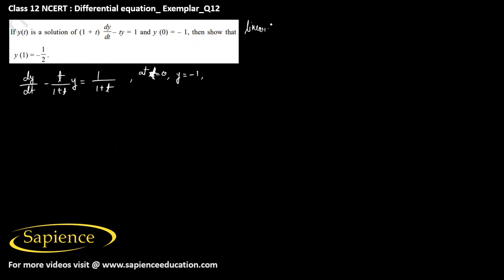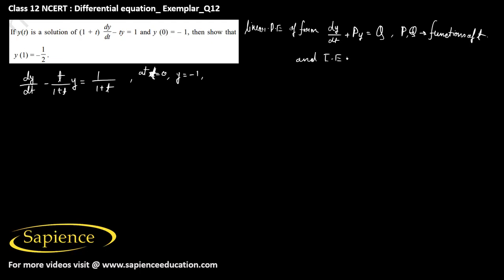This is a linear differential equation of the form dy/dt plus P·y equals Q, where P and Q are functions of t. The integrating factor is e to the power of the integral of P dt, and the solution is y times the integrating factor equals the integral of Q times the integrating factor dt.